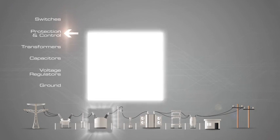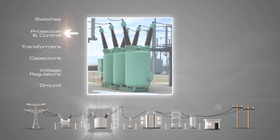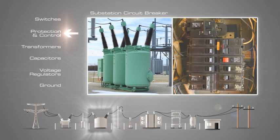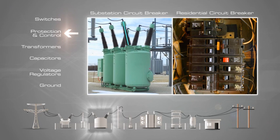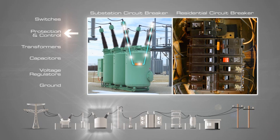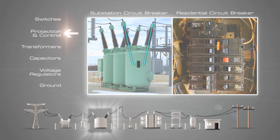An example of control equipment is a circuit breaker. A circuit breaker is an automatically operated electrical switch designed to protect an electrical circuit from damage caused by overload or short circuit. Its basic function is to detect a fault condition and, by interrupting continuity, to immediately discontinue electrical flow.